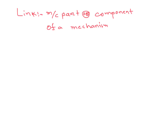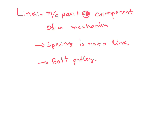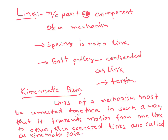A link is a machine part or a component of a mechanism. It may be rigid, flexible, or fluid. Importantly, a spring is not considered a link, but a belt and pulley are considered as a link in tension only.